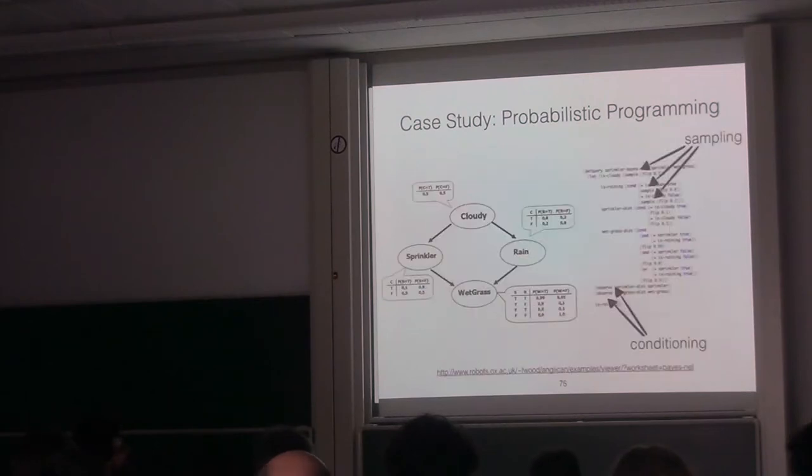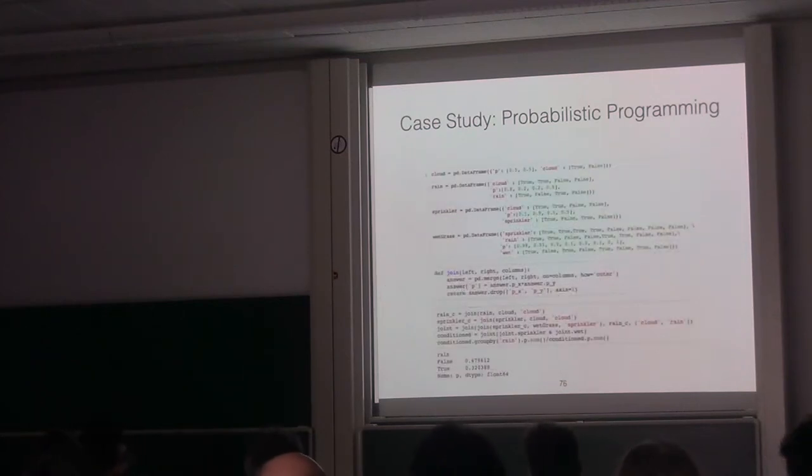What is interesting is that probabilistic programming languages allow you to model this kind of problem in a way that is more direct. So you can model every element of the Bayesian network directly into code. Probabilistic programming languages are regular programming languages with two special keywords: one that allows you to generate samples, and another one that allows you to condition observation. We can generate the same query. The idea here, we are modeling: it is cloudy, we have some sprinkler, it may rain, the grass may or may not be wet.